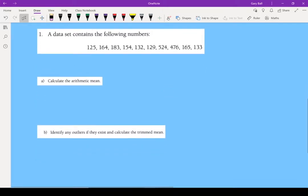So the formula is x bar equals the sum of all the numbers divided by the number that you have. So if I add all these numbers together, I end up with a sum of 2,186 and I've got a total of 10 numbers. My arithmetic mean is 218.6.